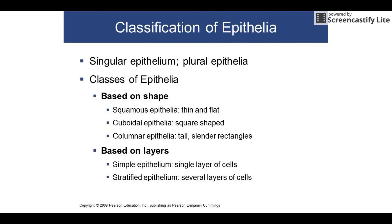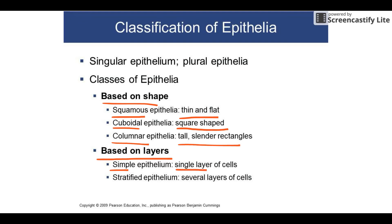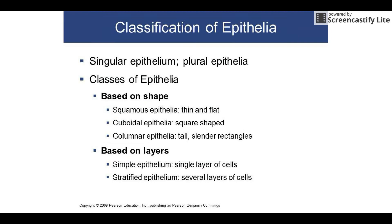When we classify epithelial tissues, we use two criteria: shape and layers. For shape, there are three options: squamous — thin and flat; cuboidal — cube shaped; and columnar — tall like columns or rectangles. For layers, the word simple means a single layer, and stratified means multiple layers.